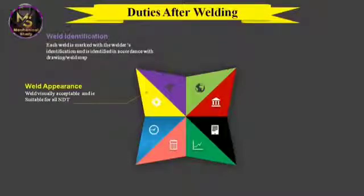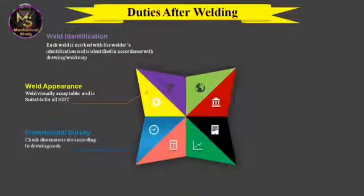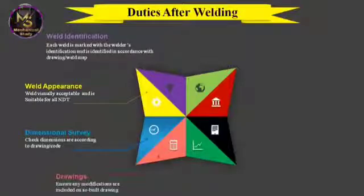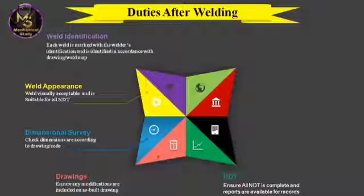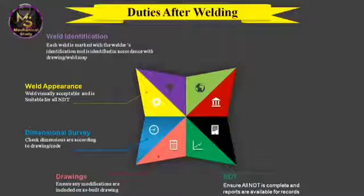Weld identification of every weld is a duty of the welding inspector. Visual inspection should be carried out to assess the appearance of the weld and its suitability for further testing. Dimension survey should check that dimensions are according to the WPS. Ensure any modifications are included on field drawings. NDT should be performed according to project specification — if 10% is specified, perform NDT on one joint out of ten; if 100%, perform on all joints. Ensure NDT reports are available for records.